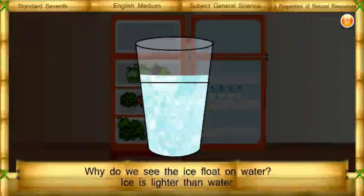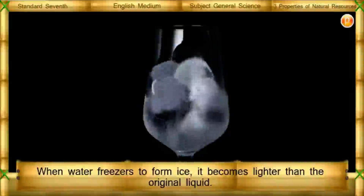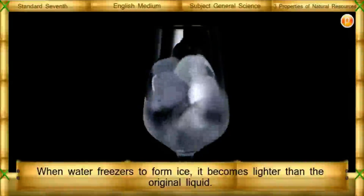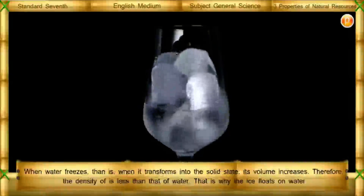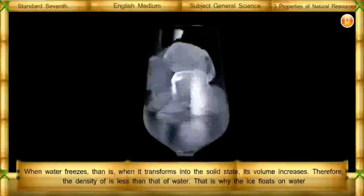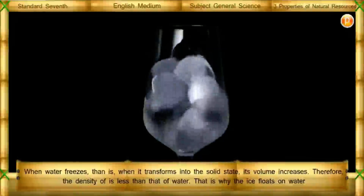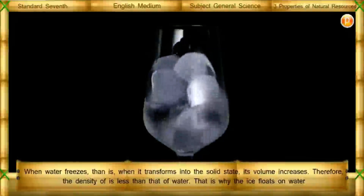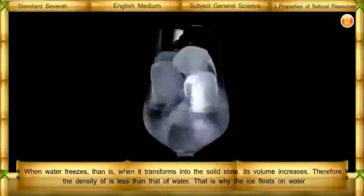Why do we see ice float on water? Ice is lighter than water. When water freezes to form ice, it becomes lighter than the original liquid. When water freezes — that is, when it transforms into the solid state — its volume increases. Therefore, the density of ice is less than that of water. That is why ice floats on water.